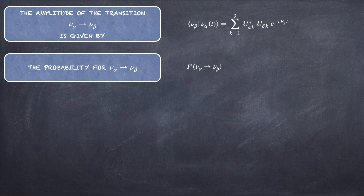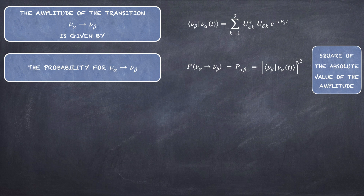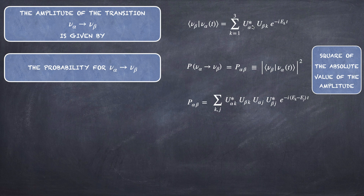Since we have the amplitude, the probability P_αβ for the transition ν_α → ν_β equals the squared absolute value of the amplitude. So P_αβ is the double summation over K and J of U*_αK U_βK times the complex conjugate of those terms with a different index — U_αJ U*_βJ — multiplied by e^{−iE_K T} and e^{+iE_J T}.